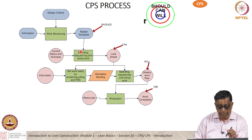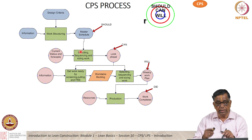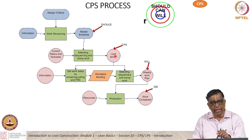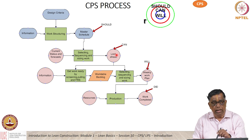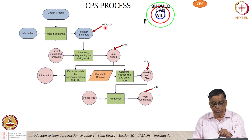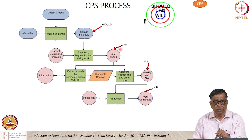When we come down to sequencing work and understanding the work better, we come to the look-ahead planning. In the look-ahead planning, if you are able to identify and remove the constraints, we say at that stage we can possibly do the work. So the client has told us we should do the work, and we say yes, we can probably do that.